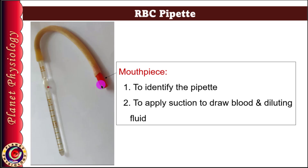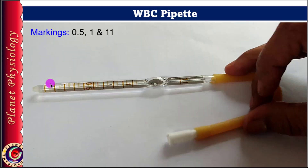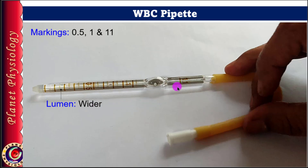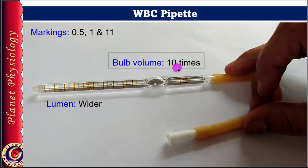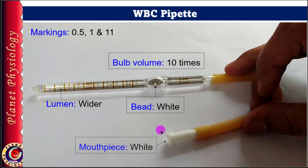Now let's take a closer look at the WBC pipette. Its basic structure is similar to that of the RBC pipette, so we shall focus on the key differences. The stem of the WBC pipette also has markings at 0.5 and 1, just like the RBC pipette, but the lumen of the pipette — the bore — is wider. Additionally, the number after the bulb is 11, indicating that the bulb's capacity is 10 times that of the stem, making the bulb slightly smaller. The bulb has a white-colored bead and the mouthpiece attached to the rubber tube is also white in color, both aiding easy identification of the WBC pipette.